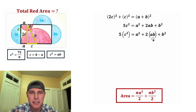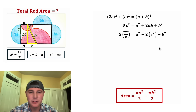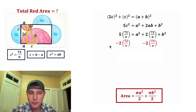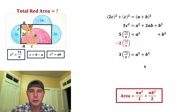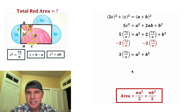So 5c² = a² + 2ab + b². Let's rewrite this with c² and ab in parentheses. Since c² = ab, we can replace ab with c². And since c² = 72/π, we substitute 72/π for both c² terms. Then let's move all the 72/π terms to the left: 5(72/π) − 2(72/π) = 3(72/π), leaving a² + b² on the right.